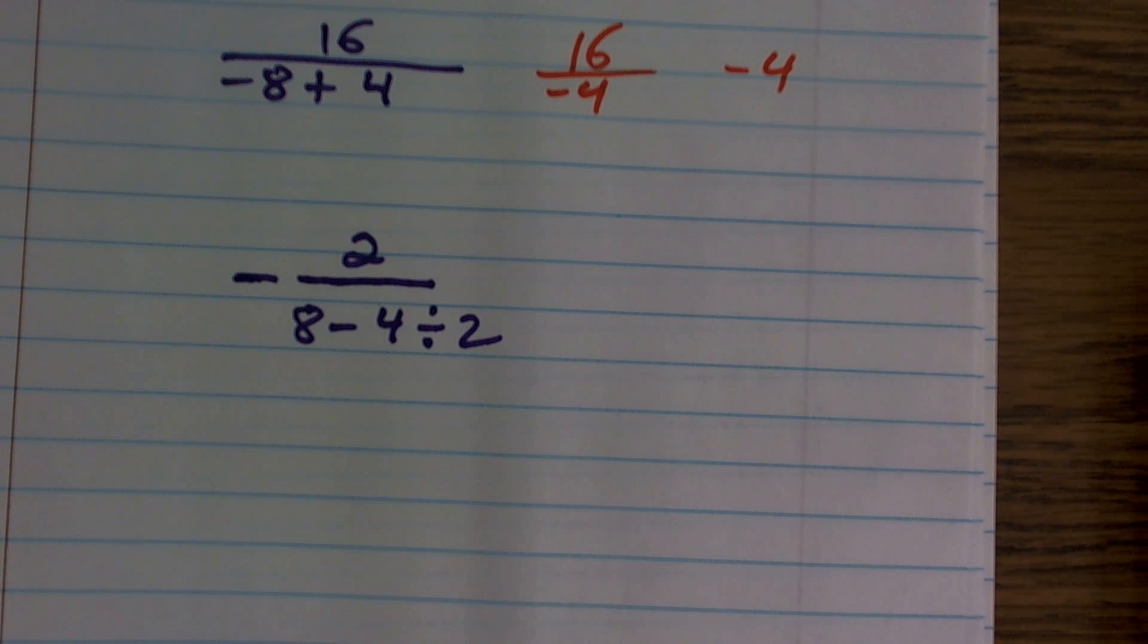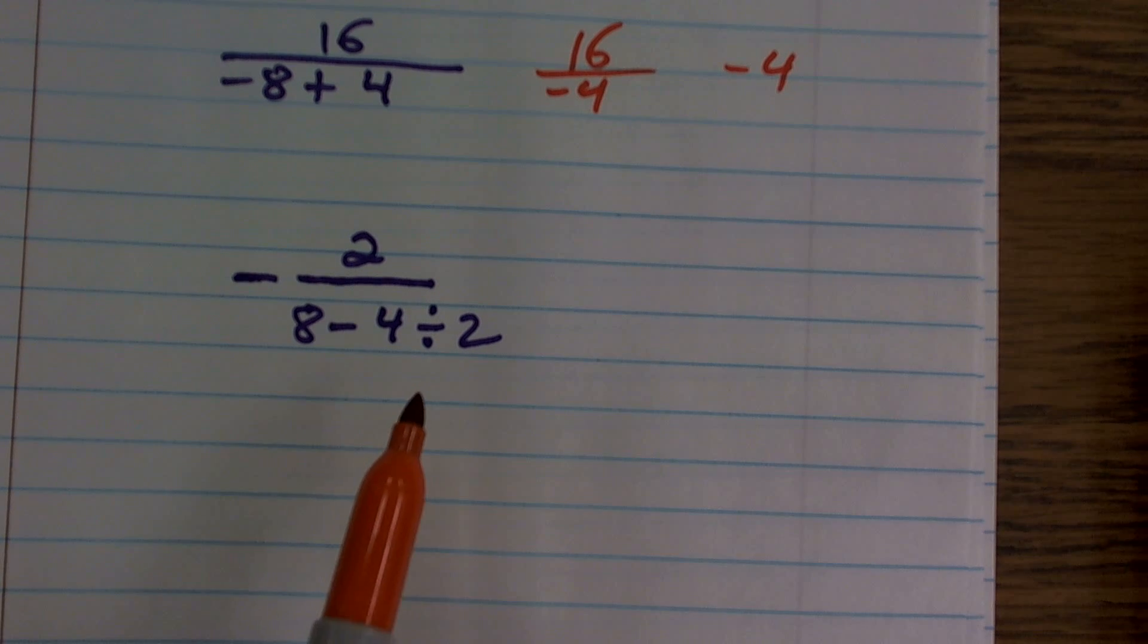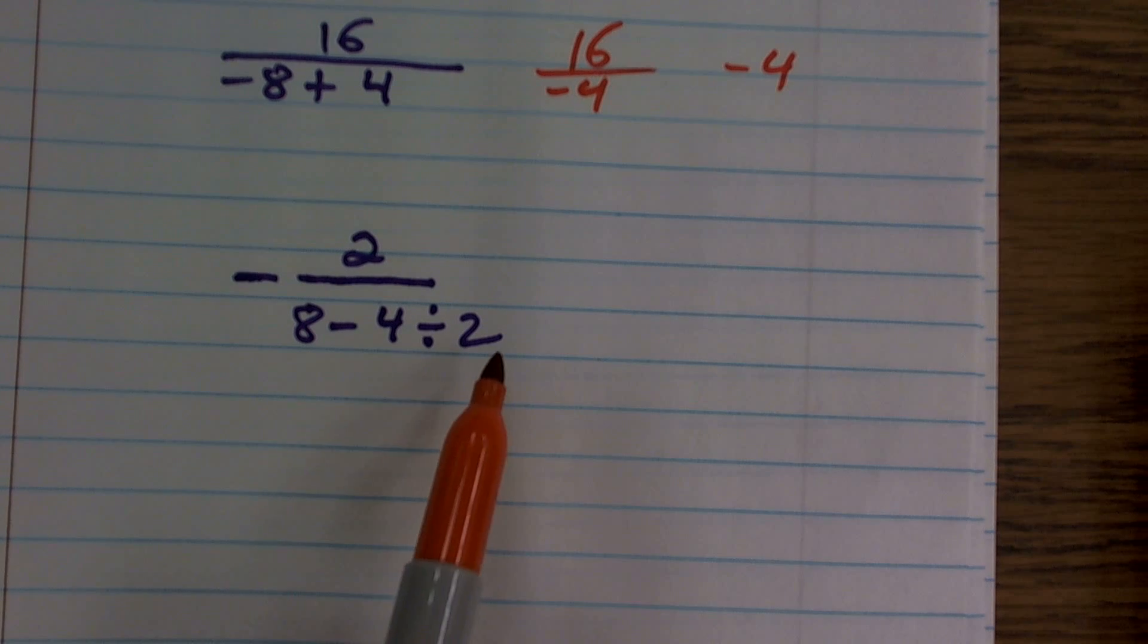And here I have a negative 2 divided by 8 minus 4 divided by 2. Now, I was kind of mean with this one. I don't really know why I did a double division symbol. We'll go through this, but you're never really going to see too many problems like this. Just simplify the numerator.